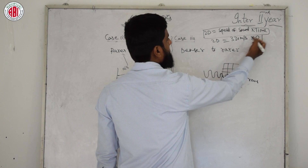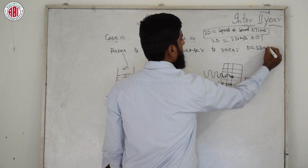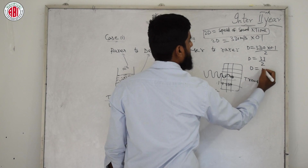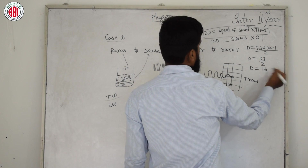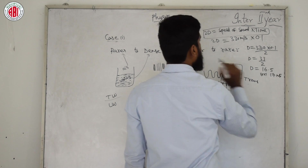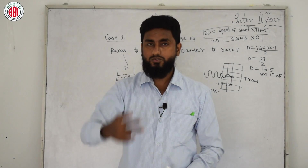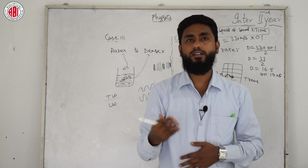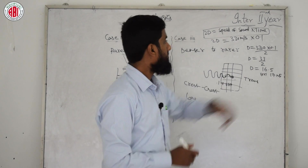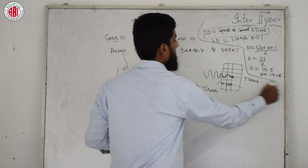Calculating: 2d = 330 m/s × 0.1 s. So d = (330 × 0.1) / 2 = 33/2 = 16.5 meters, or approximately 17 meters. This means: to hear an echo, the minimum distance between you and the denser reflecting medium must be at least 17 meters.